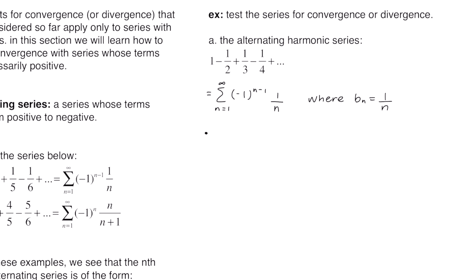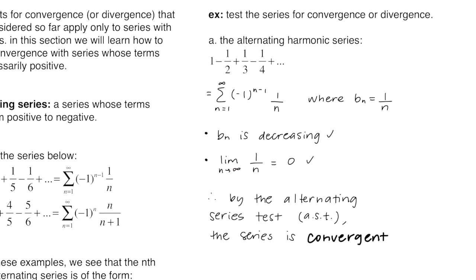According to the alternating series test, the first condition is to check whether b sub n is decreasing. Since b sub n is 1 over n, the terms are 1, 1 half, 1 third, 1 fourth, and we can see those terms are decreasing. Next we check the limit as n goes to infinity of b sub n, which is the limit of 1 over n. As n gets larger this fraction approaches 0, so the second condition is satisfied. Therefore, by the alternating series test, the series 1 minus 1 half plus 1 third minus 1 fourth dot dot dot is convergent.